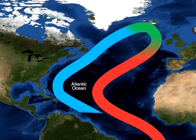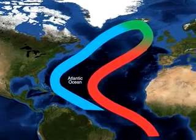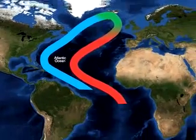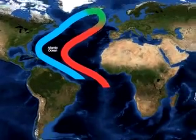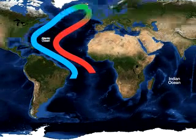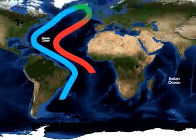This cold, dense water sinks to the ocean floor, pushing its way to the equator, along the east coast of North and South America, and then into Antarctica. This process is referred to as deep water formation.